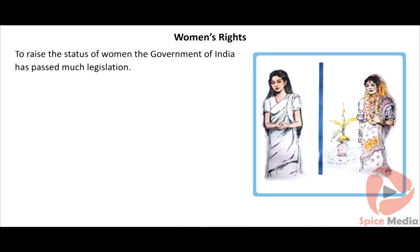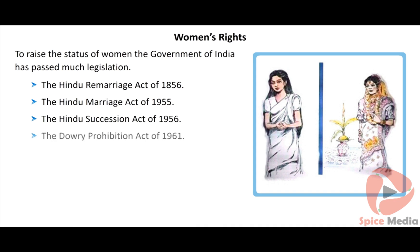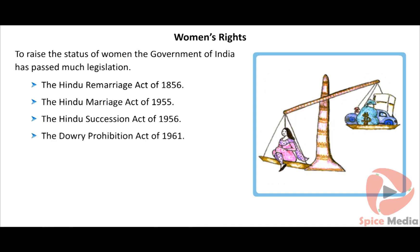To raise the status of women and remove injustices against them, the Government of India has passed much legislation. To legalize widow remarriage, the Hindu Remarriage Act was passed in 1856. The Hindu Marriage Act of 1955 states that the marriageable age for women is twenty-one. To allow women to inherit their parental property, the Hindu Succession Act of 1956 was passed. To provide justice for women who suffered under dowry, the Dowry Prohibition Act was passed in 1961.